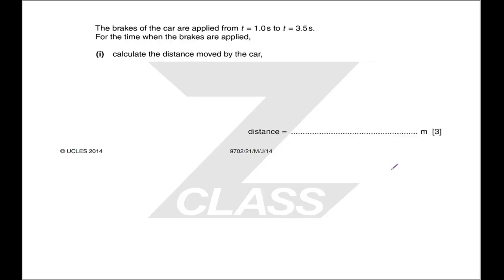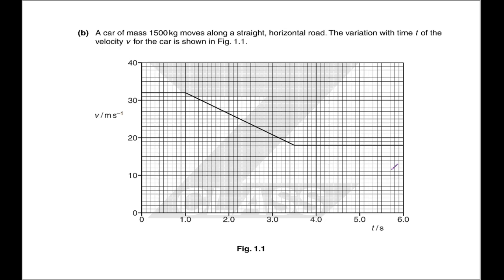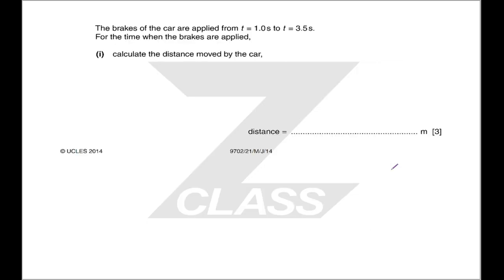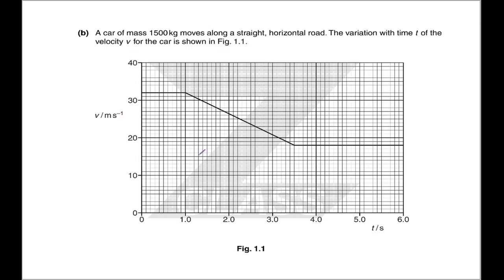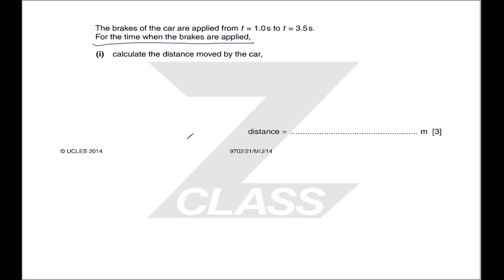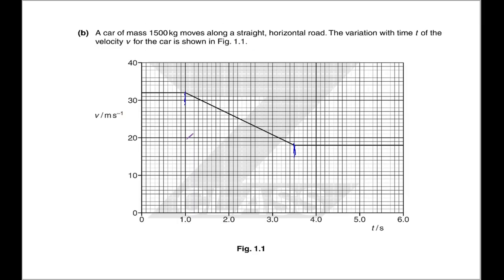Part B, we have the question down there, and we have a car, we have a velocity time graph. Excellent. And we know it's mass, so we'll be doing something with momentum at some point. The brakes of the car are applied. Calculate the distance moved by the car for the time when the brakes are applied. This is going to be the area under the graph between these two points, these two times. The key point here is that the area under the graph for a velocity time graph is the distance travelled.